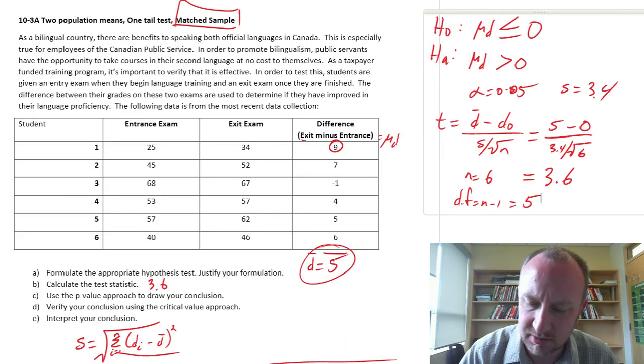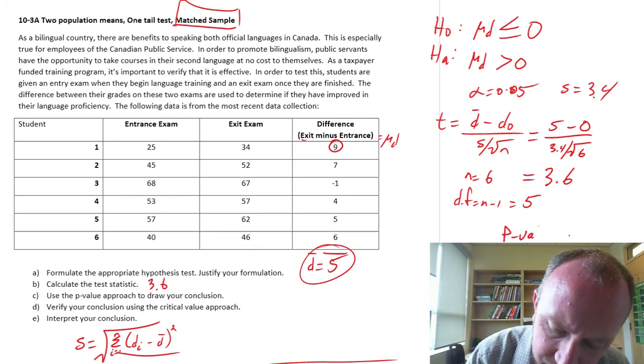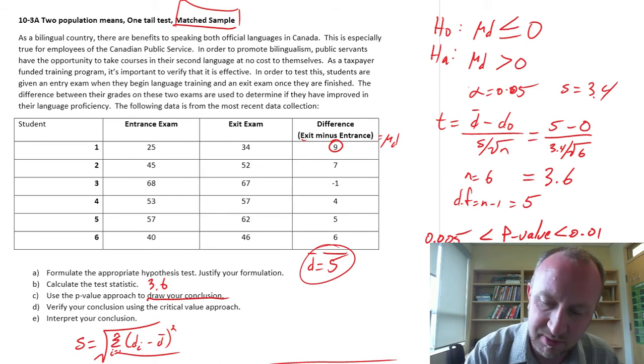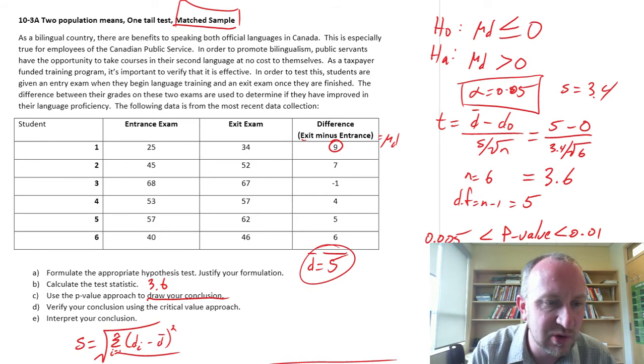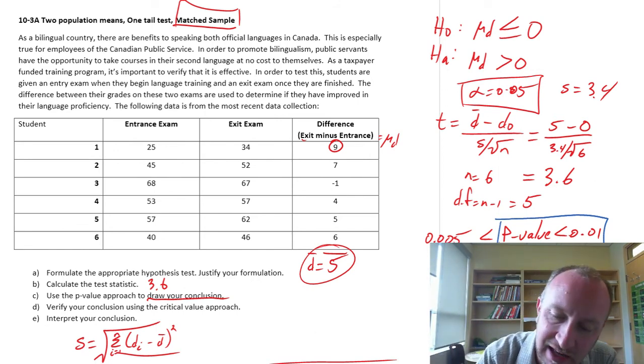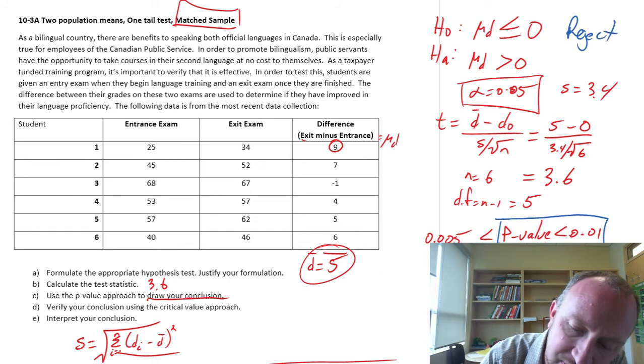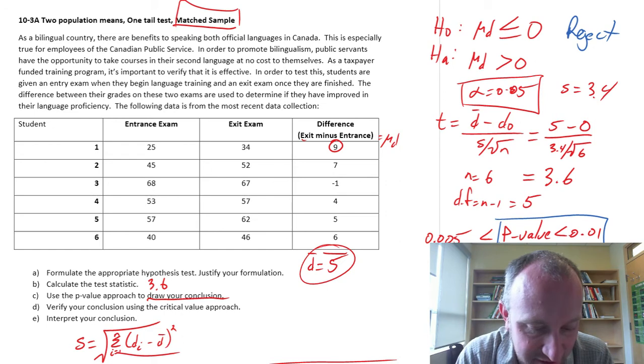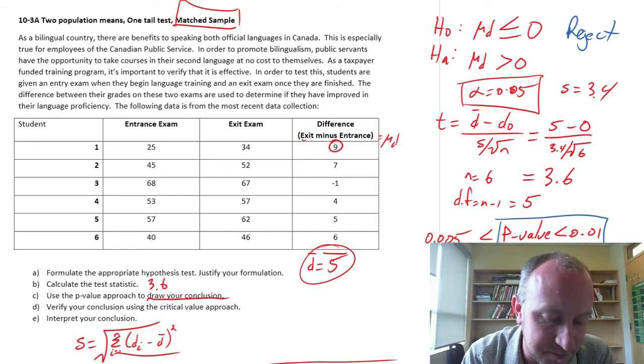So my p-value less than 0.01, greater than 0.005. Can we draw a conclusion from that? Yes, we can. Our alpha, our level of significance was 0.05, and here I know that my p-value is less than 0.01. So the same rejection rule, p-value is less than alpha. I can reject this null hypothesis, and my evidence does support the alternative hypothesis. My evidence shows that yes, there appears to be gains here. These students are improving their performance between the entrance exam and the exit exam.